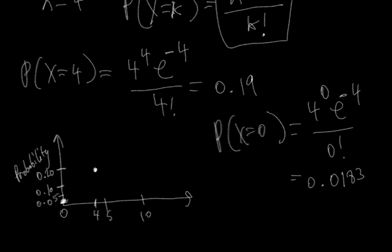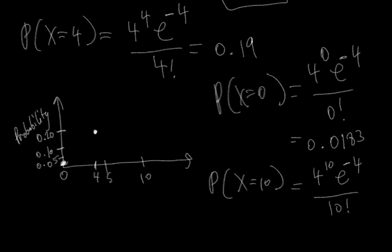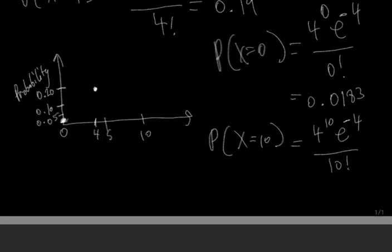Another value with a low probability would be 10. If we compute the probability of seeing 10 events given that the average is 4, lambda equals 4 and k equals 10, so we have 4 raised to the 10, times e raised to the minus 4, over 10 factorial. This comes out to 0.005, which is even lower than the probability of witnessing 0 events.